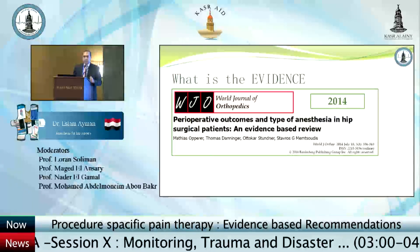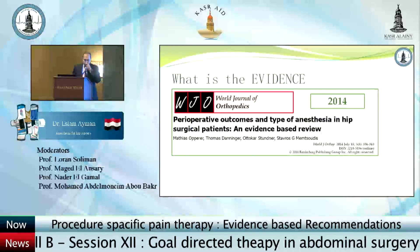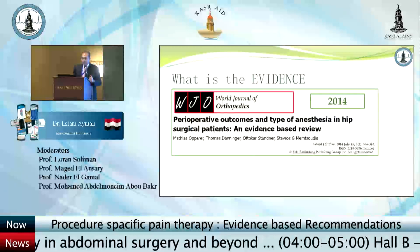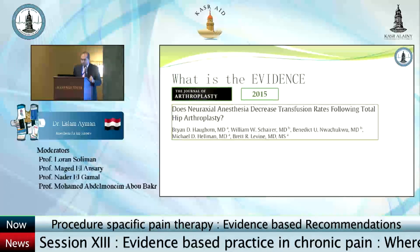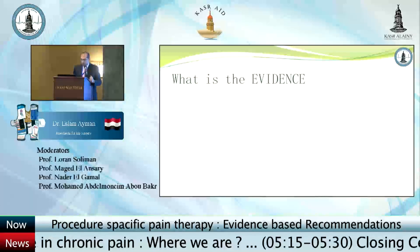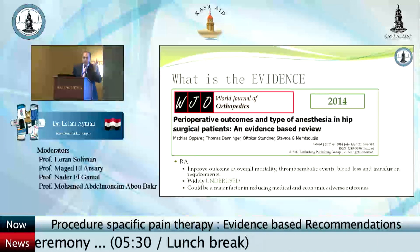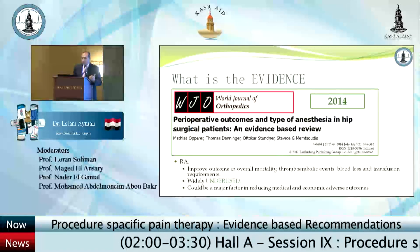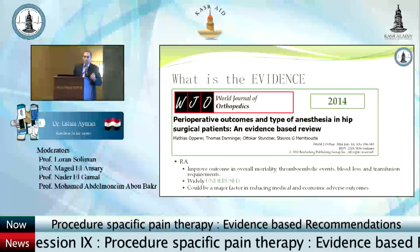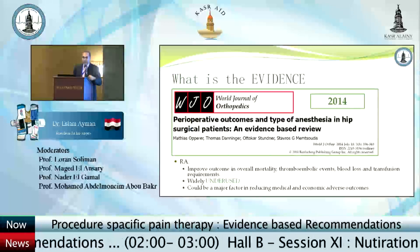What is the evidence about which type of anesthesia to use to control pain inside and after the OR? In 2014, the World Journal of Orthopedics published an evidence-based review on perioperative outcomes and type of anesthesia in hip surgical patients. They found that regional anesthesia improved outcomes regarding overall mortality, thromboembolic events, blood loss, and transfusion requirements — yet it was widely underused, with only about 36% of patients managed by regional anesthesia. They found regional anesthesia could be a major factor in reducing medical and economic adverse events.